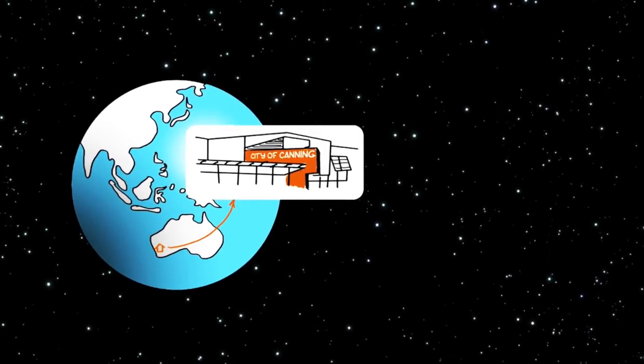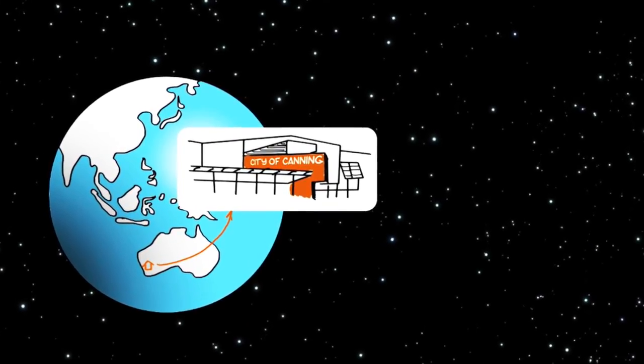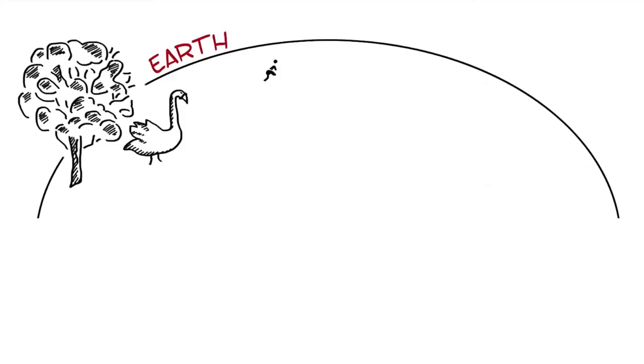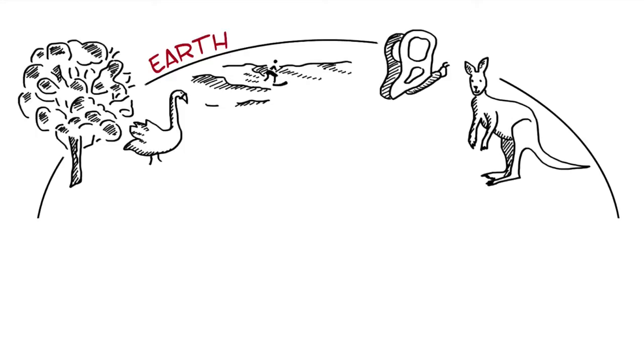Here in our solar system, we've got this great planet called Earth. On it, we have all these great things like trees and birds and beaches, waves, butterflies, kangaroos, sheep and our favorite of all, people.